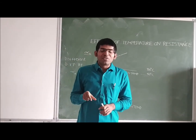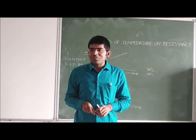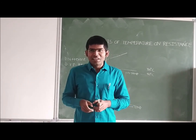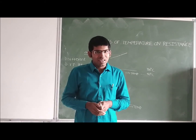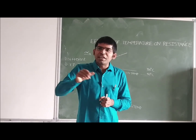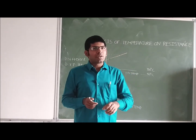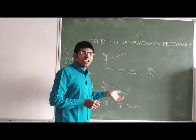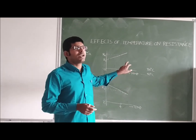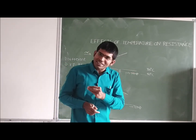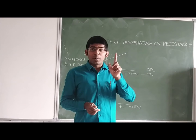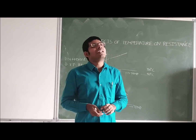One more topic to discuss is alloys. An alloy is a combination, as the name suggests — you may have heard about it in chemistry. For alloys, when we increment the temperature, the resistance is also incremented. So alloys also have a positive temperature coefficient. But this increment is very small — the resistance increment with respect to temperature in alloys is very small compared to metals. Both metals and alloys have a positive temperature coefficient, but the temperature coefficient value of metals is very high compared to that of alloys.